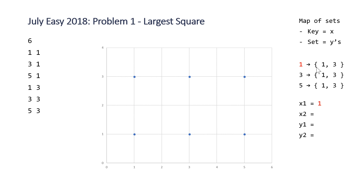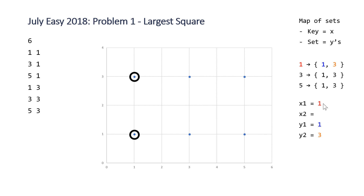Once we do that, we loop over every single pair of numbers in our set. For this example it's a bit trivial — we only have two numbers in each set, so that only means one pair. But you can imagine if we had more y values, the set would be longer. So we set y1 to be 1, and at this point we have our first coordinate: (1, 1). Then in the nested for loop we select y2 to be 3, and we now have our second coordinate x1, y2, which is (1, 3).